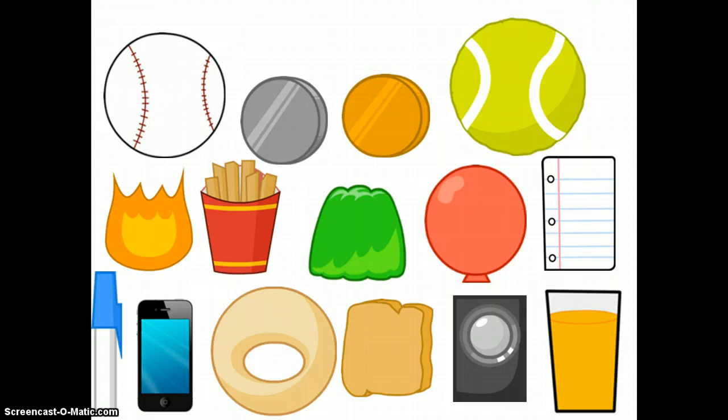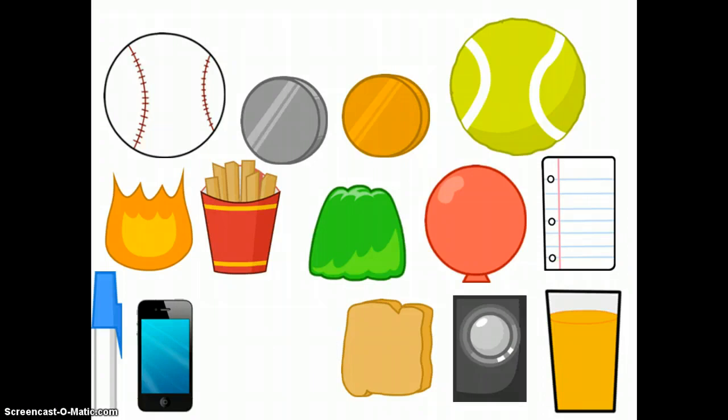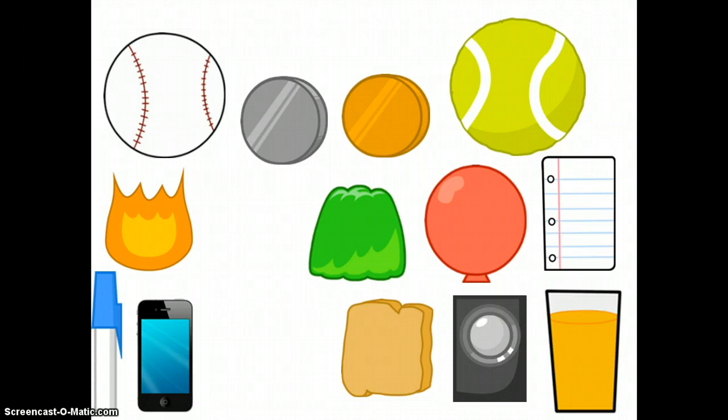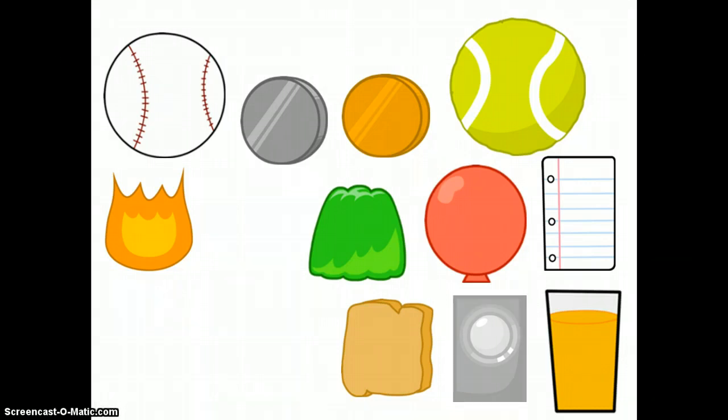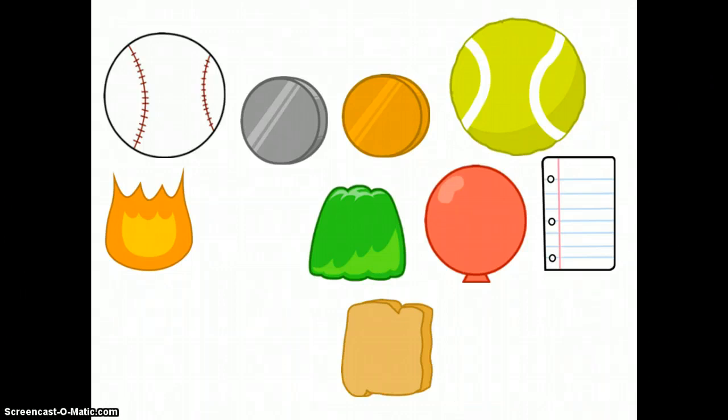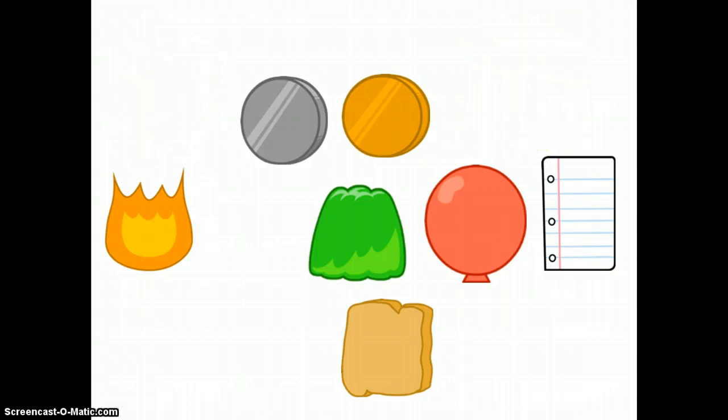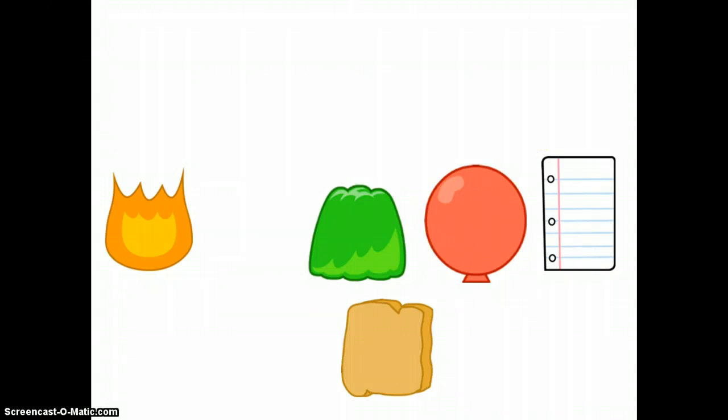Donut, you only received one like, so you do not get a win token. Same thing with fries. Pen and puffball, both of you didn't receive two likes. You both received one like each. And answer, same with you. OJ, you also received only one like. Tennis ball and baseball, you both received only one like too. And same with both of the coins.